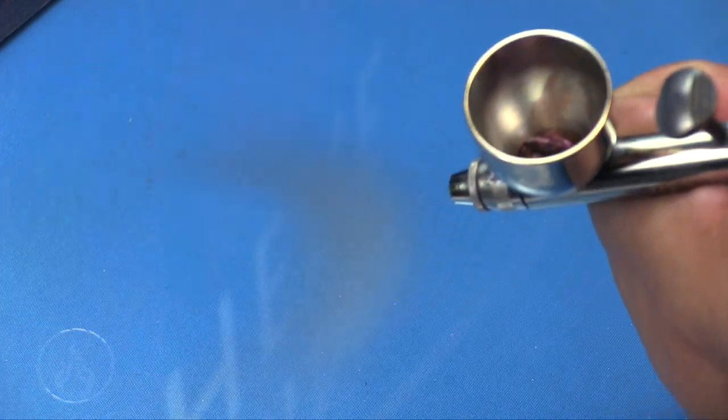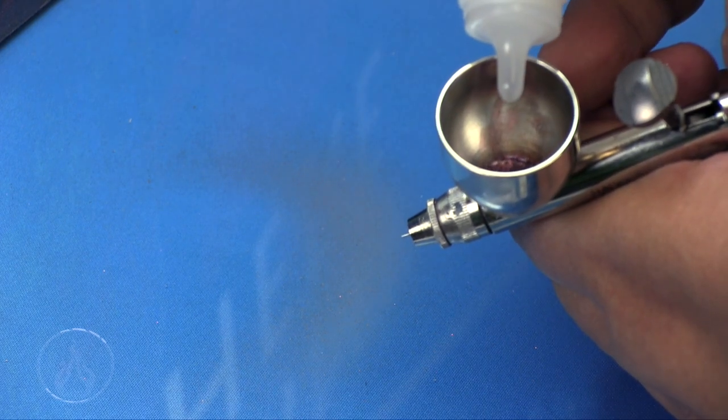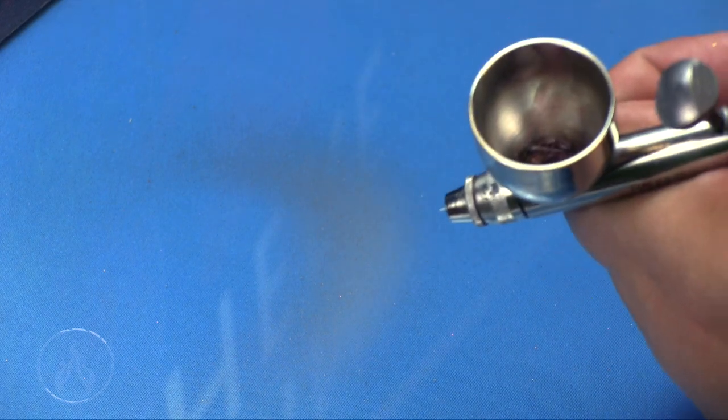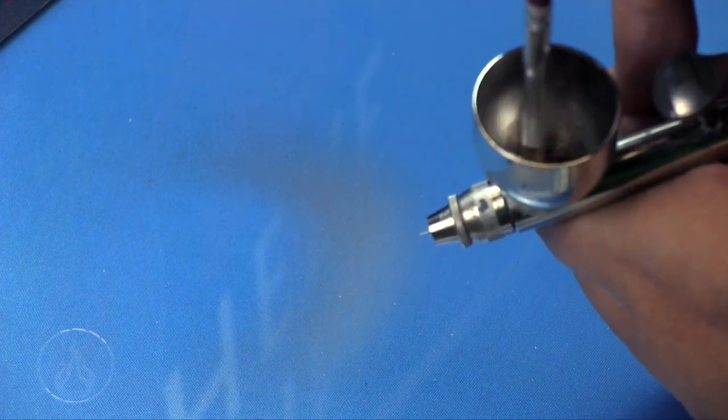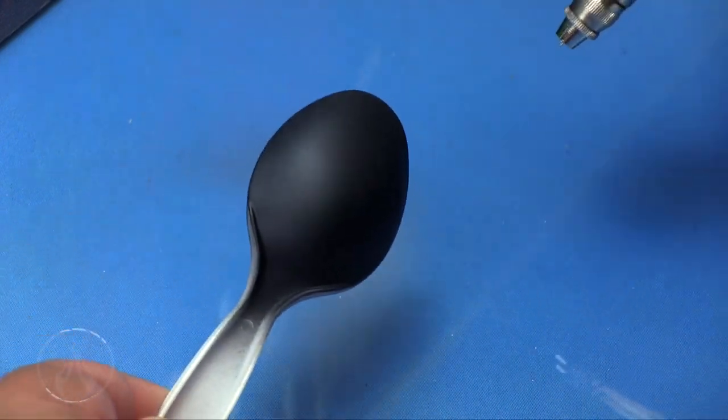I simply take another dollop of paint, throw a little bit of thinner in there. I'm going to throw three drops in here. The real nice thing about that nail polish thinner is that it is a dropper style, so you can get a fairly accurate mixing inside the paint pot.